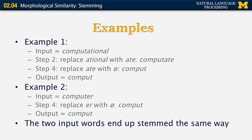Let's look at a long word that needs to go through the list of rules multiple times. For the word 'computational', we start from the first rule and find the first matching pattern in step 2, which tells us to replace '-ational' with '-ate', changing 'computational' to 'computate' — not a real word, but the stemming isn't done yet. We go back to the beginning of the rules and find a rule that replaces the final '-ate' with blank, producing 'comput' (C-O-M-P-U-T). At this point, no other rules apply and we stop, producing 'comput' as the stem.